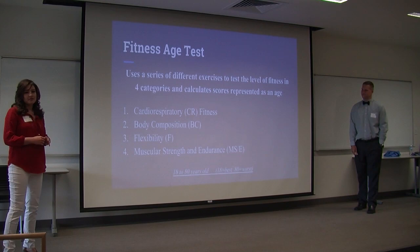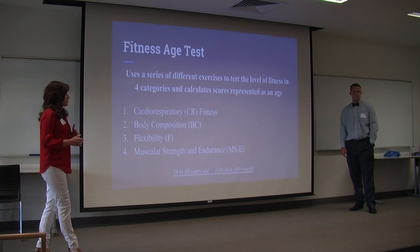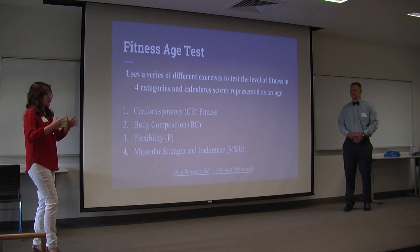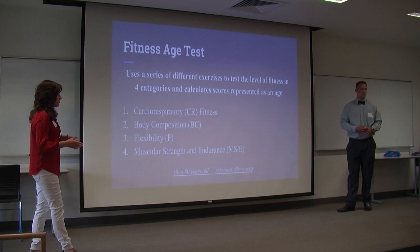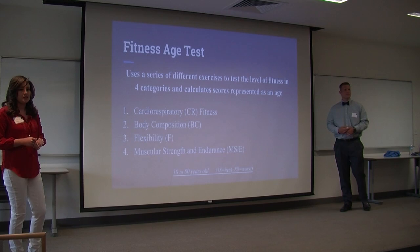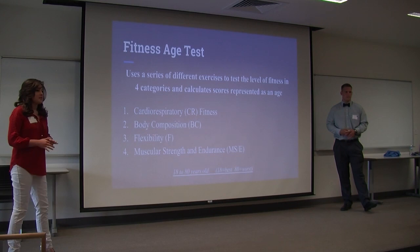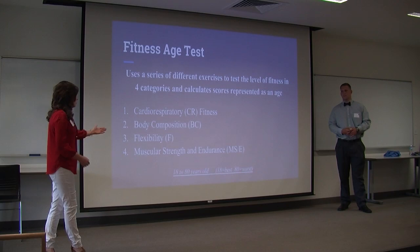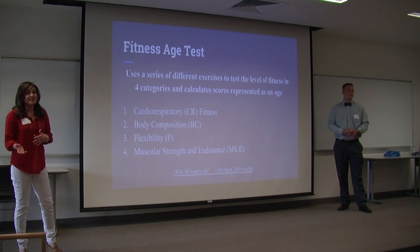Fitness age testing uses a series of different exercises to test the level of fitness, and it uses four categories. It calculates scores represented as an age — not chronological age, but the physiological age, your fitness level for that age. The four categories are cardiorespiratory fitness, body composition, flexibility, and muscular strength and endurance. Very important to note: in fitness age testing, the scores range from 18 to 80. 18 is the best — you're really fit — and 80 is the worst.